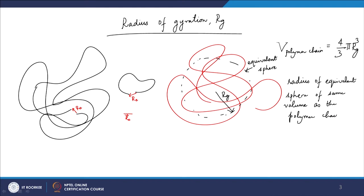The idea of Rg is not unique to polymers; we can also define Rg values for other kinds of objects such as rods, discs, cylinders, and so on, and we will discuss that towards the end. But the way Rg scales with the number of monomers or repeating units in the chain is something that is unique to polymers.